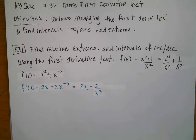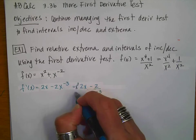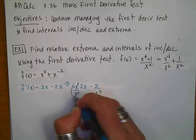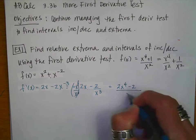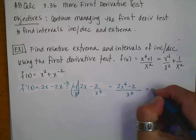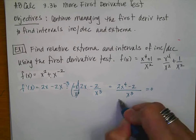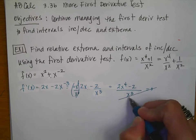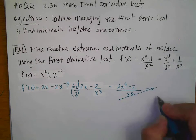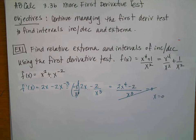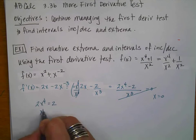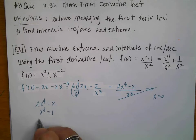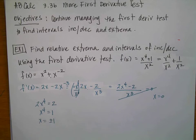I'm going to put these two terms together by multiplying by x cubed over x cubed, giving me 2x to the fourth minus 2, all over x cubed. Setting that equal to 0 and cross-multiplying, the denominator goes away, giving me 2x to the fourth equals 2, so x to the fourth equals 1, and x equals plus or minus 1.